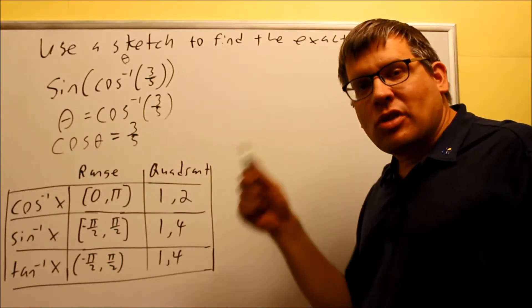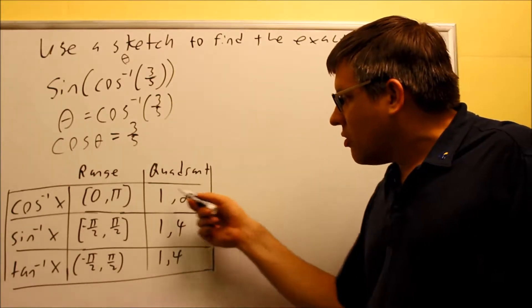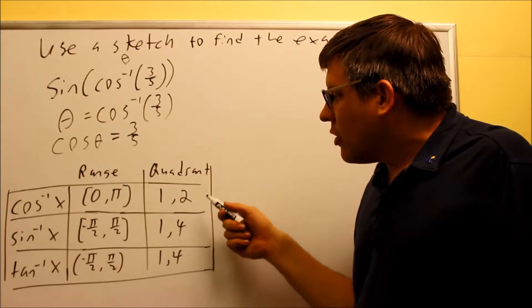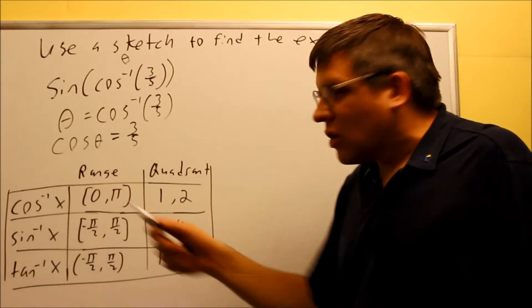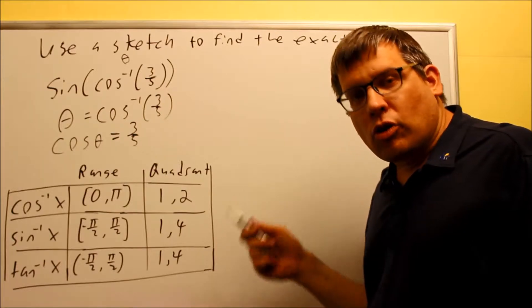Now from this, we're going to pull the quadrants out. Now this says that the range has got to be from zero to pi, that's zero to 180 degrees. And if you look at the unit circle for that, that tells you that you have to be in quadrant number one and quadrant number two. So that's how you can tell. So if we have an inverse cosine, we're only allowed to draw the triangle in quadrant one or quadrant two.